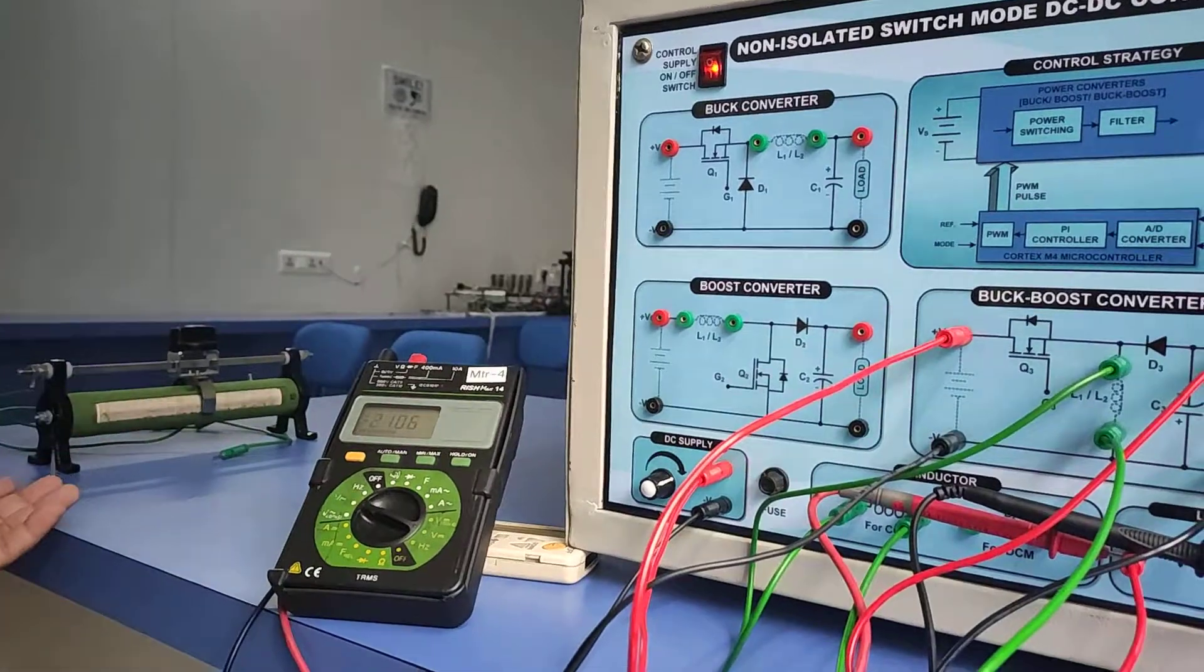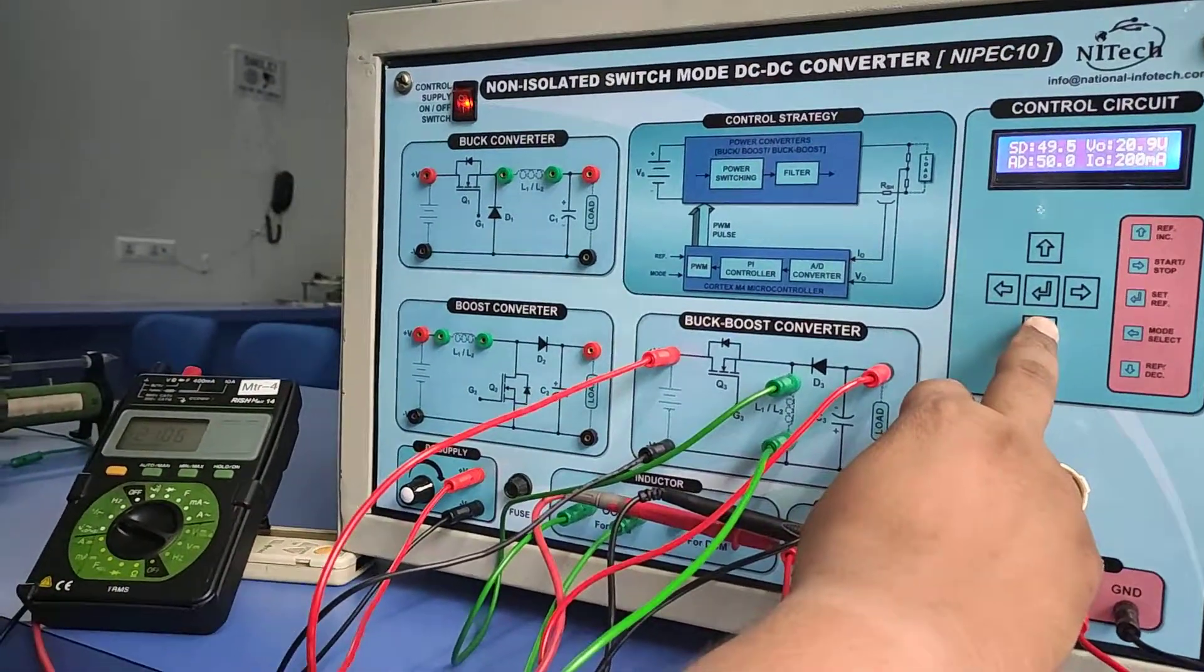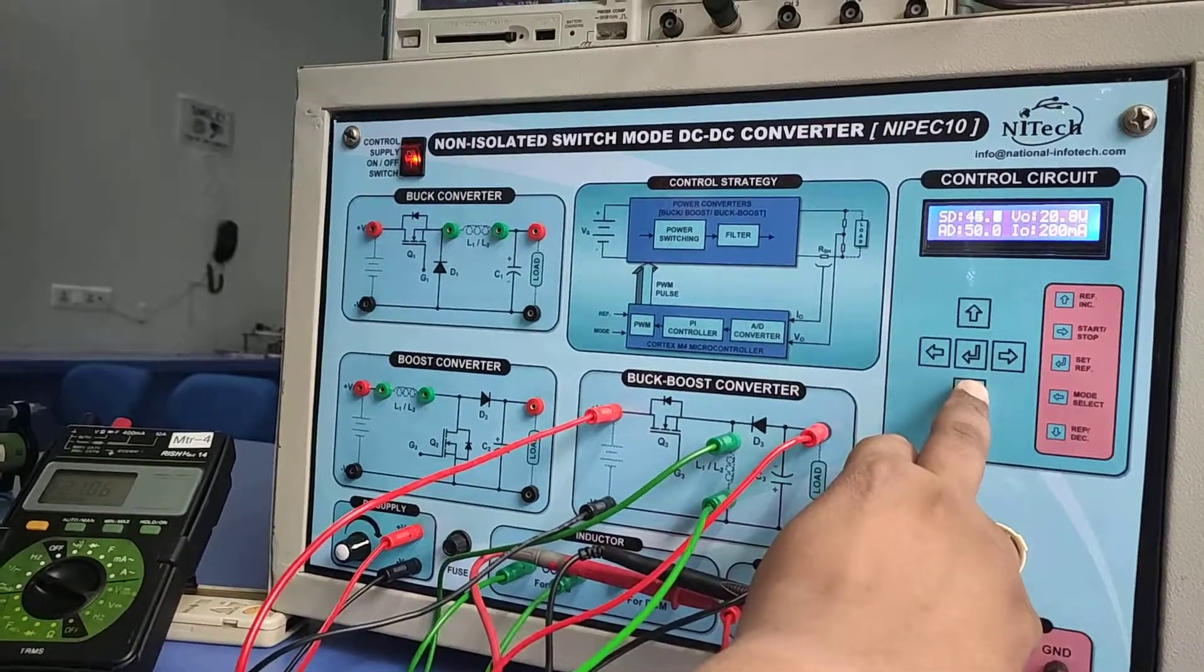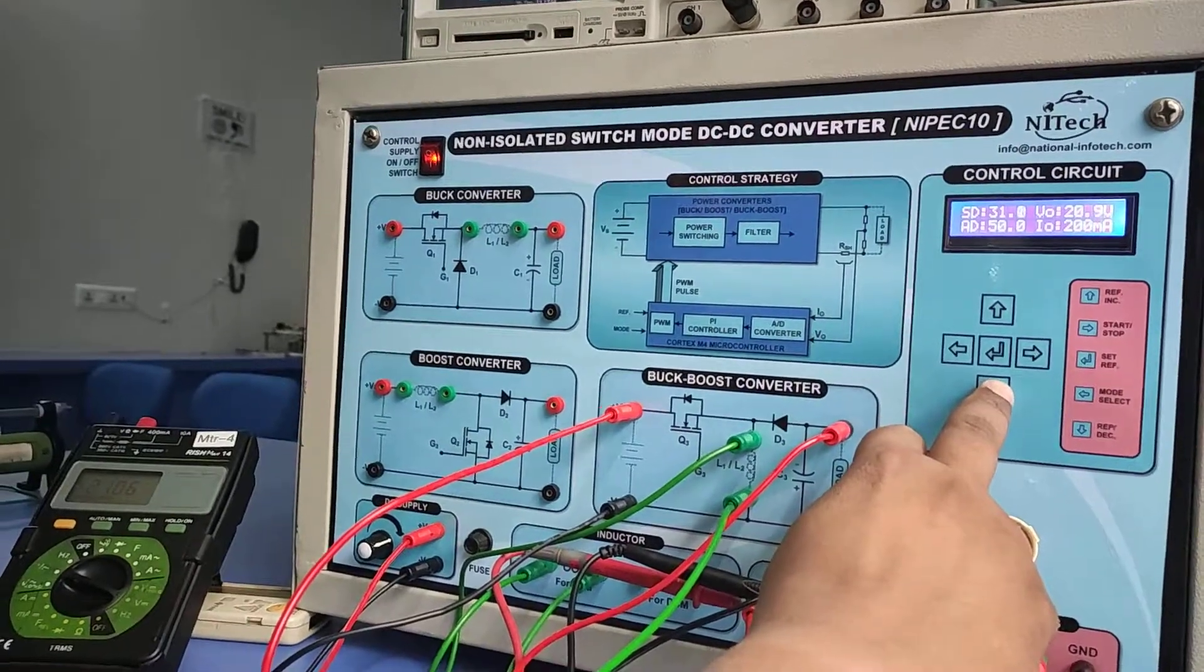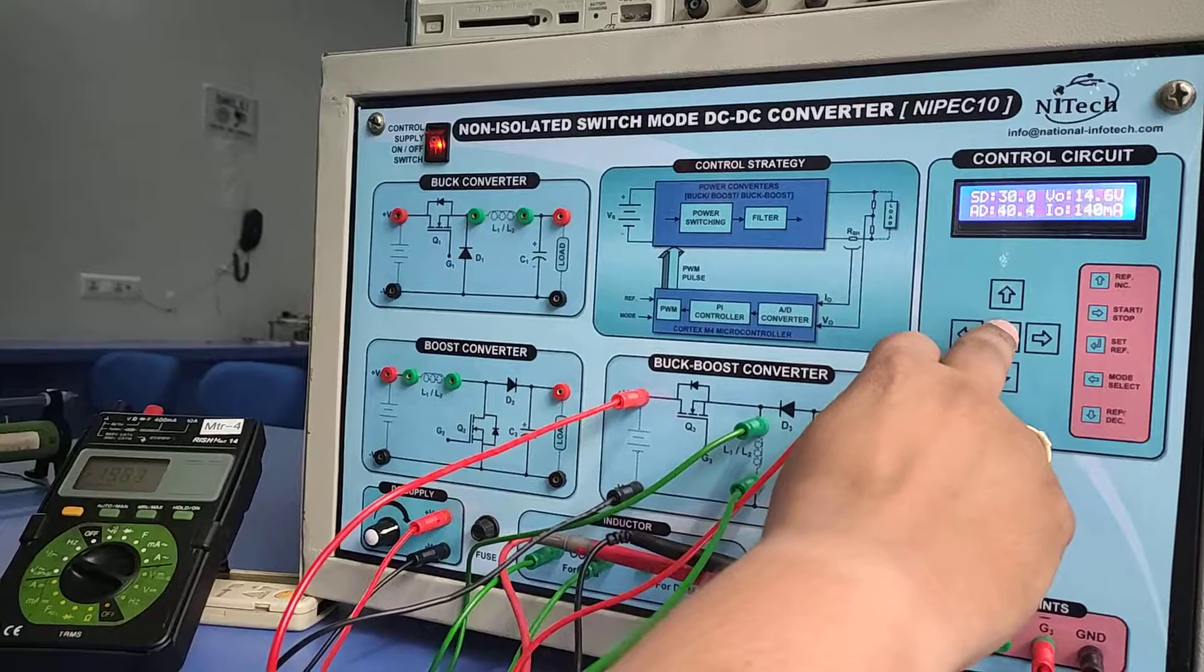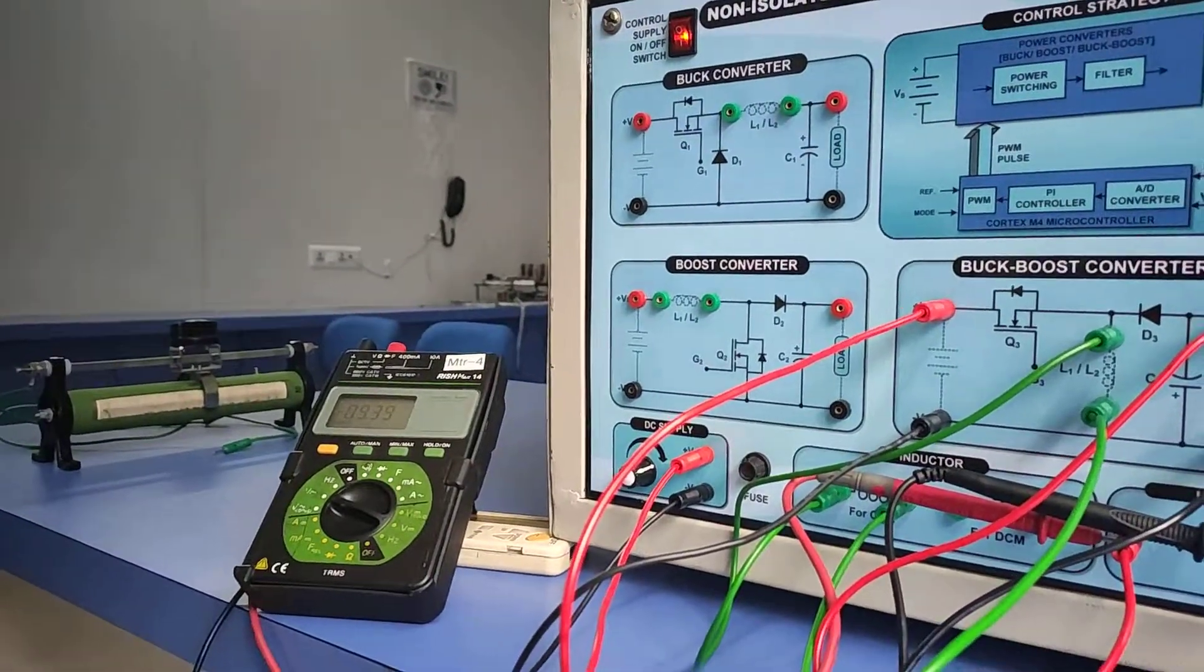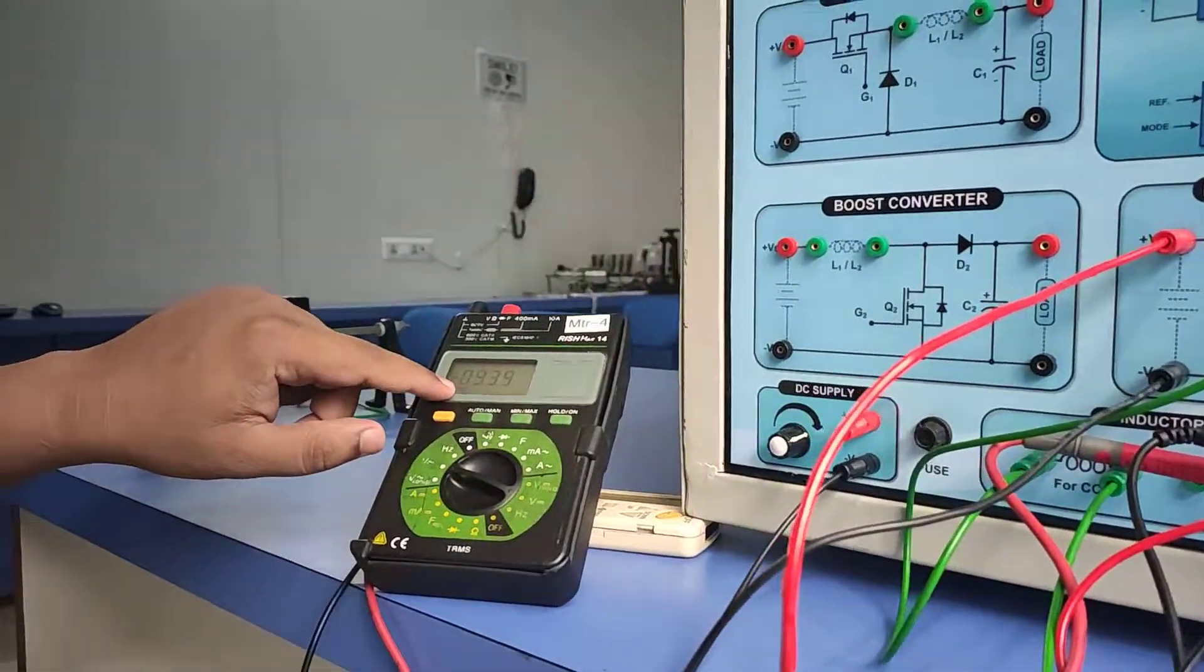Now I'll make the duty ratio approximately 30 percent, and we'll observe the output voltage. When we set 30 percent duty ratio, as per theory we should get approximately 9 volts at the output. On the multimeter you can see the output voltage is 9.3 volts with a duty ratio of 30 percent.